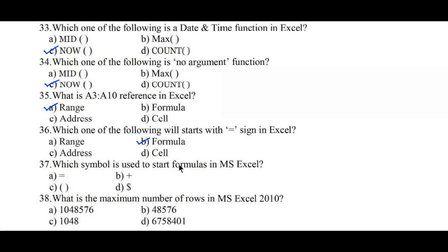Question number 37: Which symbol is used to start formulas in MS Excel? Option A: equal to (=), B: plus (+), C: open and closing round braces, D: dollar symbol ($). In order to start any formula we type equal to, hence Option A is the right answer. Question number 38: What is the maximum number of rows in MS Excel 2010? Options: A: 1,048,576, B: 48,576, C: 1,048, D: 6,758,401. Option A, 1,048,576, is the right answer.